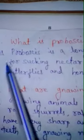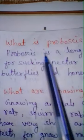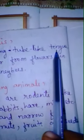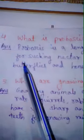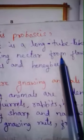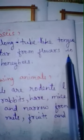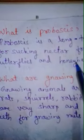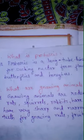Question number 4: What is a proboscis? Your answer is: A proboscis is a long tube-like tongue used for sucking nectar from flowers, found in butterflies and honeybees.